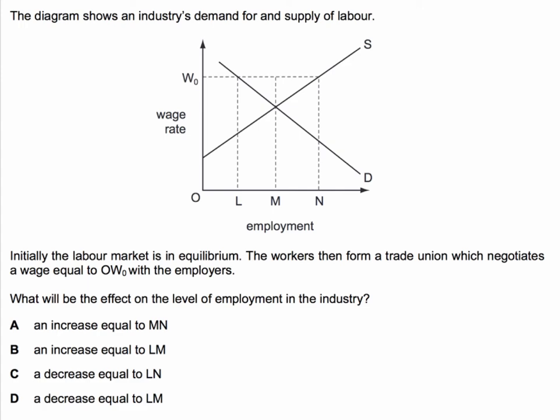Now, the key to this question is to not misread it. A lot of people would read this as the effect on unemployment. No, the question is about employment — the number of people employed. And the correct answer, I hope you got it, is D: a decrease equal to LM.